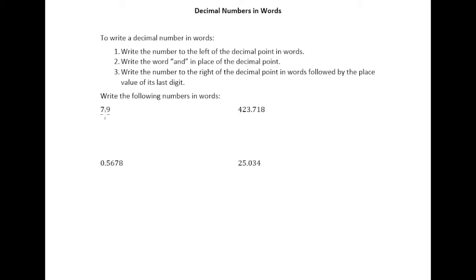Starting with this first example of 7.9, number one says to just write out the word seven. Number two says write the word 'and' in place of the decimal point. So when you see that decimal point you say 'and'.